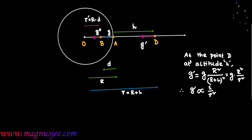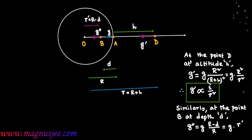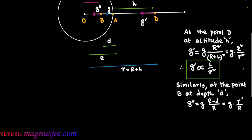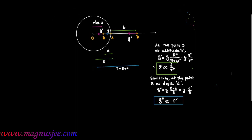The distance of point B from center O is r' = R minus D. At point B at depth D below earth surface, acceleration due to gravity is G' = G·(R - D)/R = G·r'/R. Therefore G' is directly proportional to r'. That means below the earth surface, acceleration due to gravity is directly proportional to distance from center of earth, but above the earth surface it is inversely proportional to the square of distance.